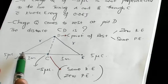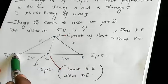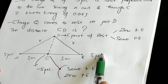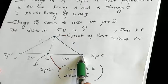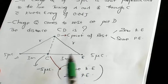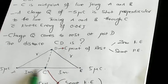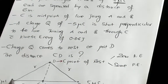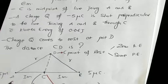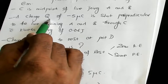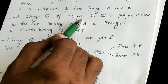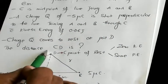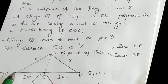Let us say this is point A and this is point B. There is a point charge of 5 micro coulombs at A and another point charge of 5 micro coulombs at B. They are separated by 6 meters. Now, C is the midpoint of the line joining A and B.